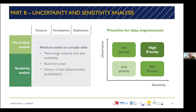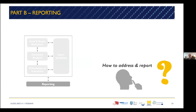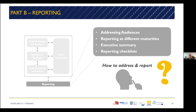Uncertainty analysis tells you how certain your result is, and sensitivity analysis tells you how assumptions and parameters influence these results. If a certain parameter shows both high uncertainty and high sensitivity — meaning results are very sensitive to a change in that parameter — we have a high priority for data improvement. Conversely, you don't need to spend a lot of effort improving data that is much more certain and low in sensitivity. Methods need to comply with technology maturity, data availability, goal and scope, and the nature of the data.